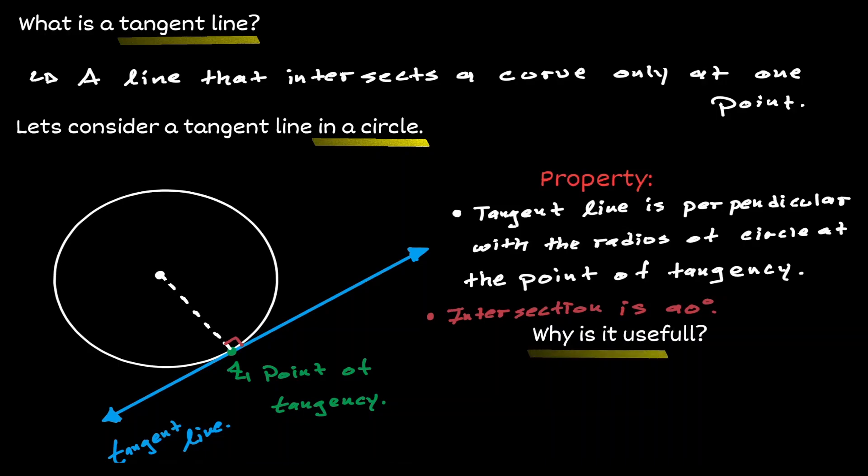Why is this property useful? If we choose any point in our tangent line, let me choose this point right here, let's call it P, and I connect this point to the center of our circle.